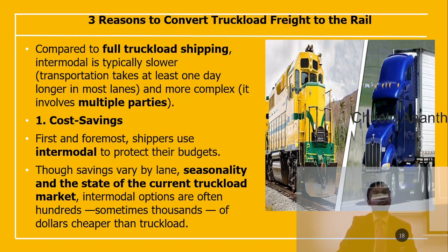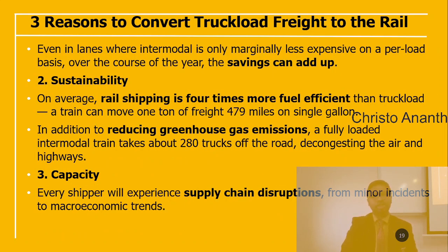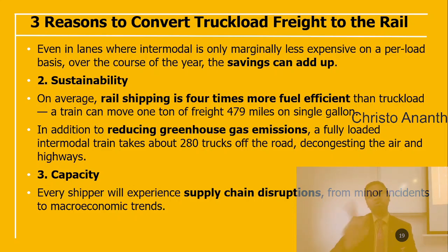For cost savings, shippers use intermodal to protect their budgets. Savings vary across different lanes — seasonality, demand, and the state of the current truckload market play vital roles. Even in lanes where intermodal is only marginally less expensive on a per-load basis, small savings can add up. For sustainability, rail shipping is on average four times more fuel efficient than truckload. A train can move one ton of freight 479 miles on a single gallon of fuel, and a fully loaded intermodal train takes about 280 trucks off the road, significantly reducing greenhouse gas emissions.